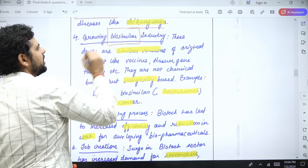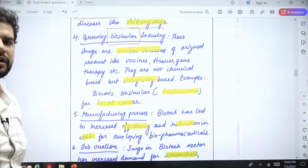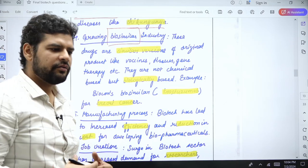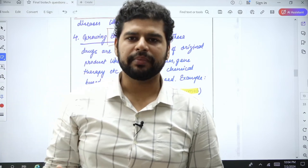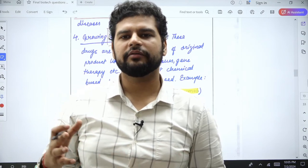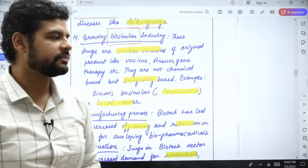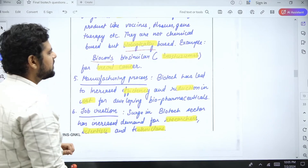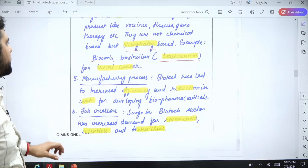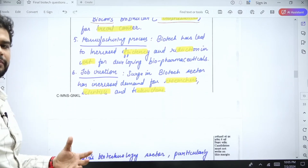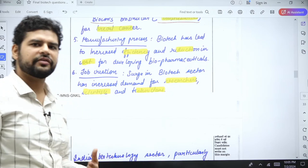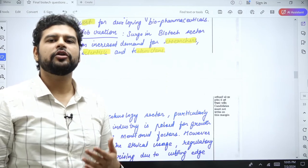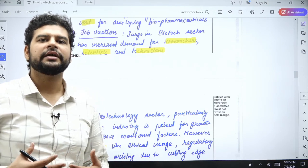Let me introduce the term biosimilar. You must have heard about generic medicines — biosimilars are a fairly new concept. Biosimilars are similar compounds to the original natural compound; for example, if you create an insulin working similarly to the original insulin produced in the human body, you have created a biosimilar. Biocon has created a biosimilar for breast cancer called Trastuzumab. Manufacturing processes have also been improved in efficiency because of biotechnology. Job creation is also significant, as the biotech sector needs researchers, scientists, and engineers.